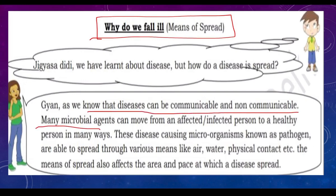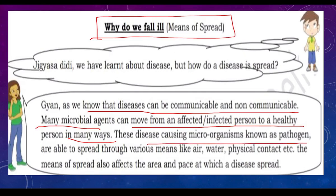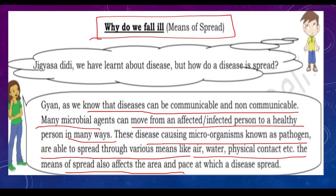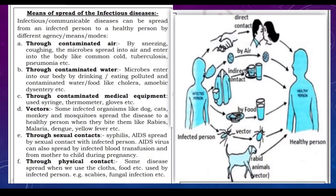A disease can move from one person to another (ek se doosre mein ja sakta hai) or it may not. Any microbial agent can move from an infected to a healthy person in many ways. These disease-causing microorganisms, known as pathogens, are able to spread through various means like air, water, physical contact, etc. The means of spread affect the area and pace at which disease spreads. Let's see the different means of spread.